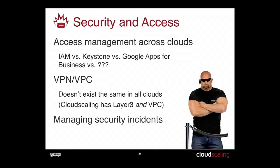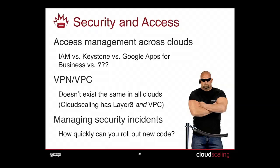If your entire application depends on one particular server being up all the time, good luck — you're going to have some downtime. This was written about a month and a half ago, just before Heartbleed came out. You really have to be thinking about this kind of stuff when you design your app: what happens if there's a kernel-level exploit and you need to roll out new code to your entire network at once?